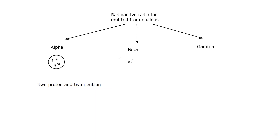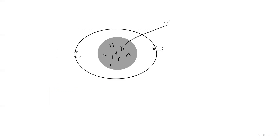Beta is an electron. There are two types of beta decays but we are learning only one — the negative beta decay. Now if we draw the atom, inside the nucleus we have nucleons such as neutrons and protons, and around the nucleus we draw electrons. Alpha particle — two protons and two neutrons — comes out. But beta is an electron, so from where does this electron come, even though we don't see an electron inside the nucleus?